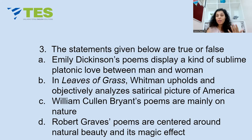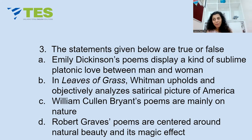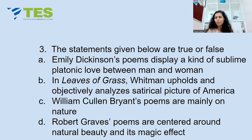'Leaves of Grass' is a collection of poetry by Walt Whitman, written throughout his life, with poems like 'Drum Taps' and 'Memories of President Lincoln' added over time. In these poems, Whitman speaks like a nationalist and praises America — so B is False. C: William Cullen Bryant's poems are mainly on nature — True, as he was an American Romantic poet. D: Robert Graves's poems are centered around natural beauty — False. Robert Graves was a war poet and confessional poet who spoke about the harsh realities of war. So: A True, B False, C True, D False — Answer is Option A.